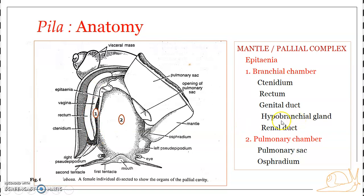The next structure in the branchial chamber is the hypobranchial gland — a glandular thickening at the base of the penis. It is responsible for secreting substances that help during the act of copulation. Additionally, the anterior chamber of the renal organ projects into the branchial chamber near the posterior termination of the epithenia. The renal opening is an oblique slit situated in a shallow depression.